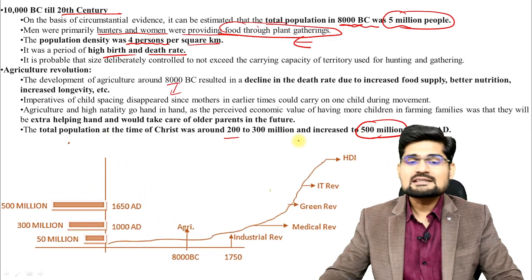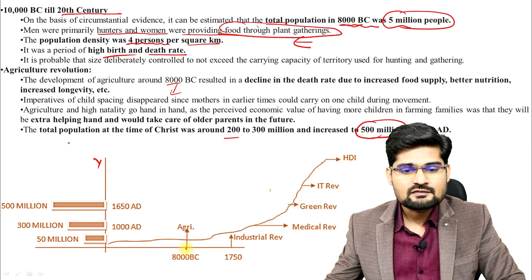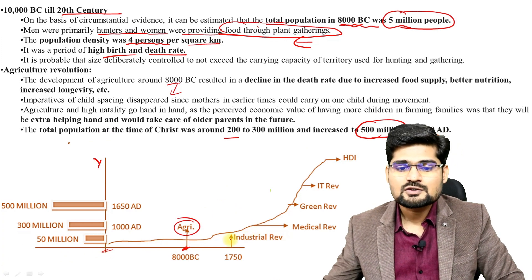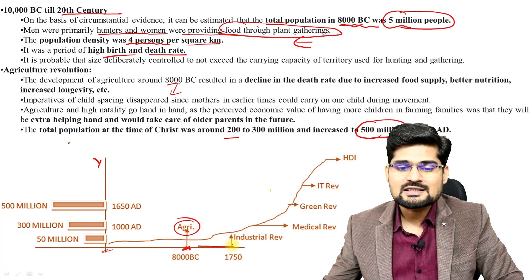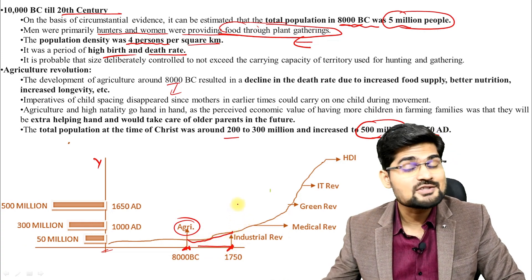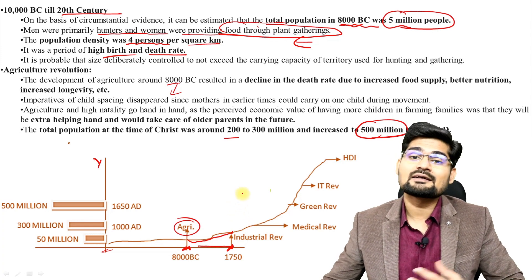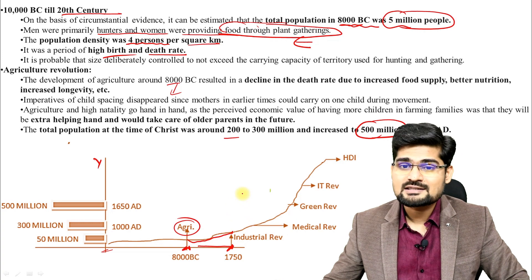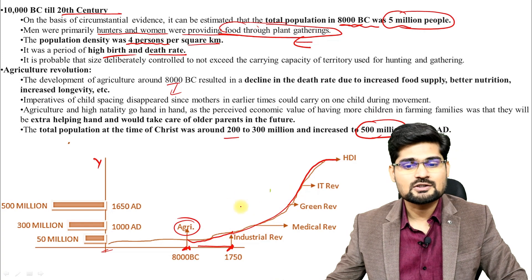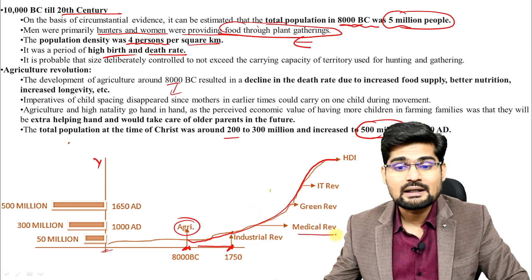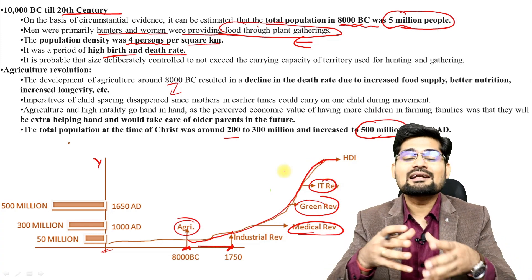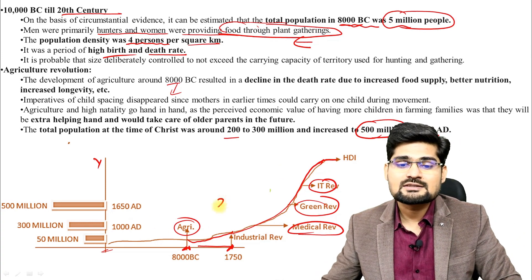From agrarian to industrial revolution in the 18th century, diversification of economy, opportunities, working factors, economic and social factors all changed and there was huge growth. Further, exponential growth followed. Other revolutions that took place include the medical revolution, green revolution, and IT revolution. These are the factors that led to huge population growth in just 200 years, as we have seen in the previous graphs.